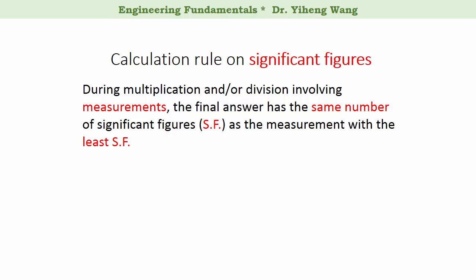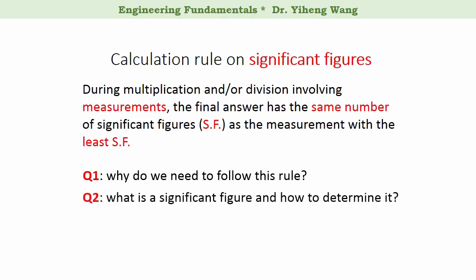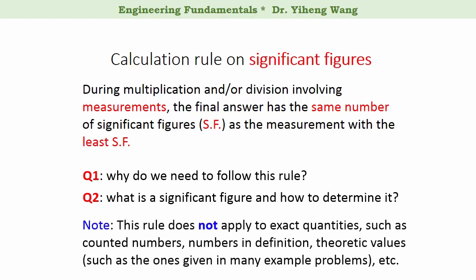So you might have two questions. First, why do we need to follow this rule? And second, how do we determine the number of significant figures in a measurement? Through this video, hopefully you will gain answers to both of these two questions. But before that, please note this rule only applies to measurements. It does not apply to exact quantities such as counted numbers, numbers used in definitions, or theoretical values that you probably see in example problems in your math textbooks.